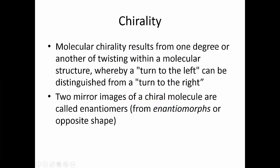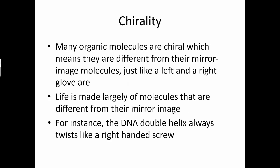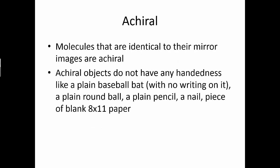Molecular chirality results from twisting within a molecular structure, whereby a turn to the left can be distinguished from a turn to the right. Two mirror images of a chiral molecule are called enantiomers, from enantiomorphs or 'opposite shape.' Many organic molecules are chiral — different from their mirror image molecules, just like left and right hand gloves. Life is made largely of molecules that are different from their mirror image. The DNA double helix, for instance, always twists like a right-handed screw, not a left-handed one.